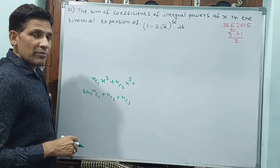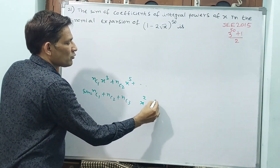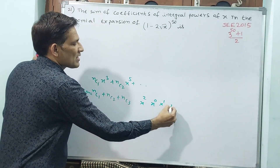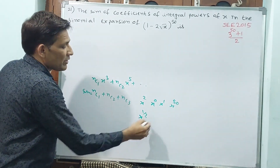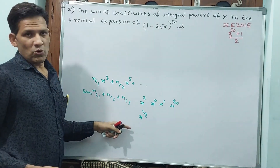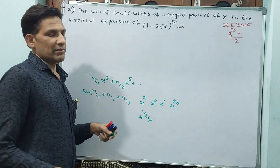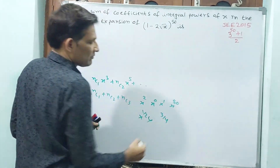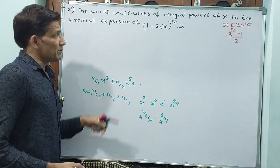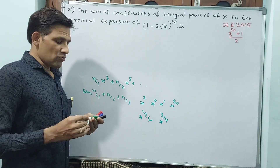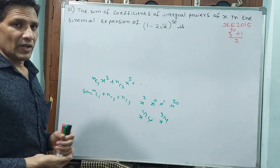X should have an integral power — meaning the power of x should be 2, 0, 1, 50, etc. For example, if x has power 1/2, that is not an integral power — 1/2 is a rational number. Similarly 3/4 is not an integer. So we only take integral terms.